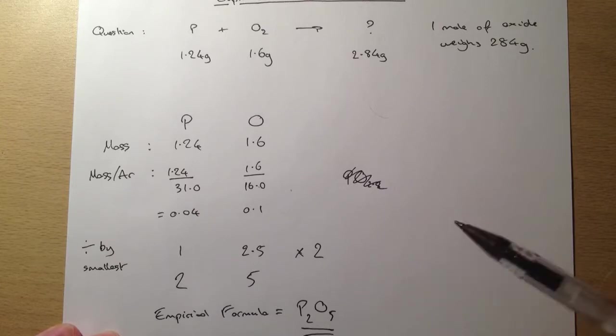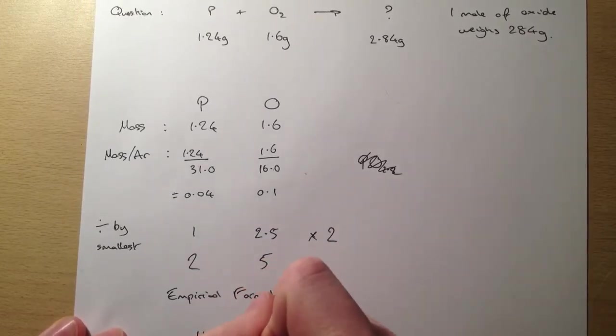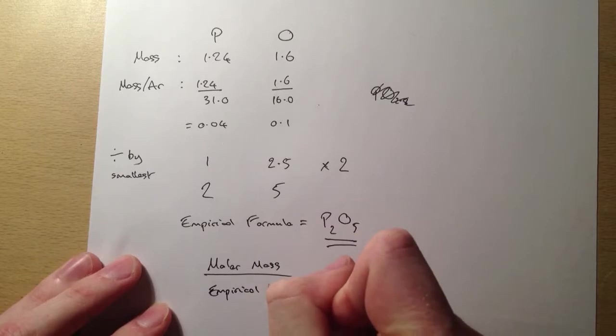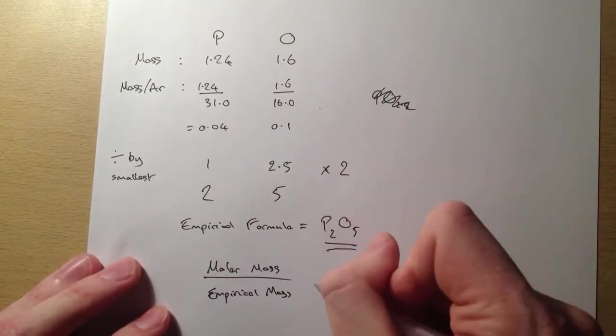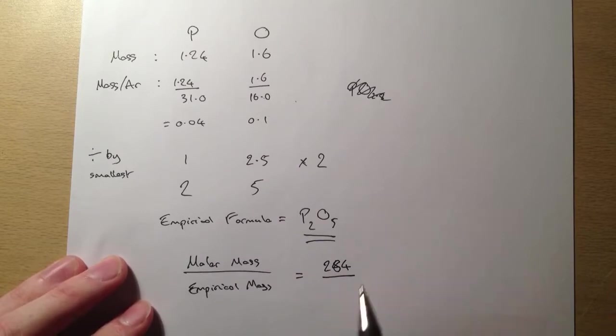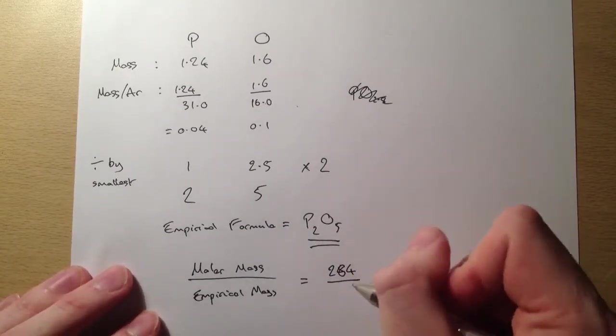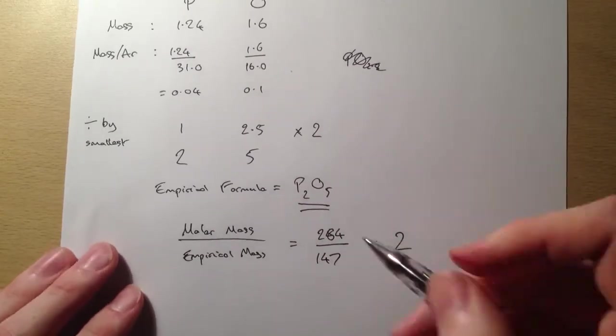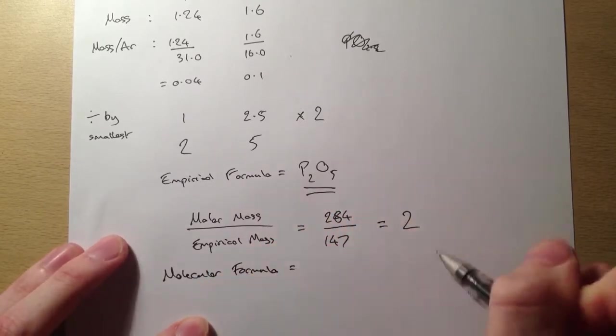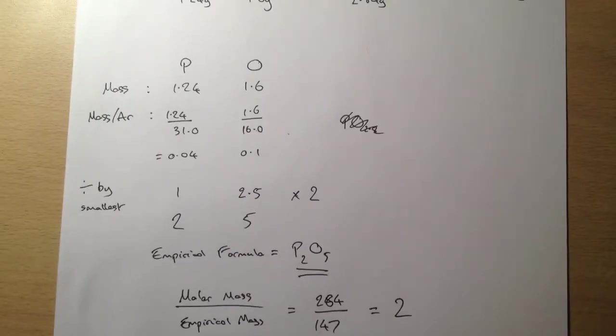Now, the next thing we have to do is find out the molecular formula. And to do that, we need to know what the molar mass is, and we're given that. So the way we do this is we do the molar mass divided by the empirical mass in order to work out what ratio we've got these in in our actual compound. So our molar mass, we're told, is 284. The empirical mass is going to be 2 times 31 for the phosphorus added to 5 times 16 for the oxygen, which is 142. So we divide those out and we get 2, which must mean that our molecular formula is going to be 2 times this. It's going to be P4O10. That is our molecular formula then. Okay, so that's the first question done.